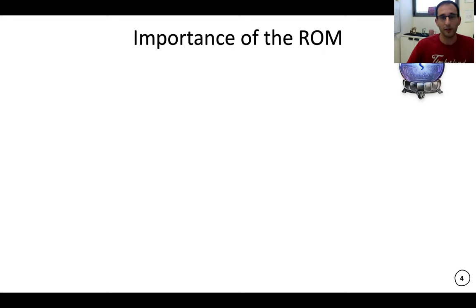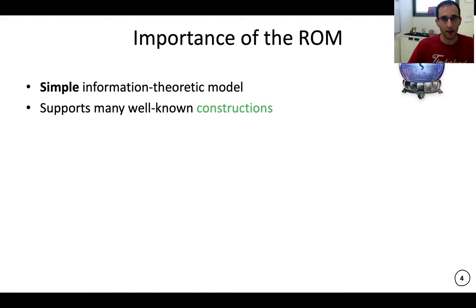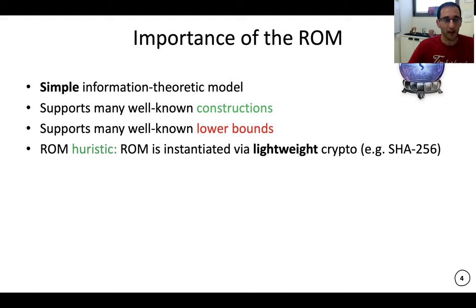Why do we study the random oracle model? It's a very simple information theoretic model. It talks about probabilities of the random oracle. There's no computational assumptions here. There's beautiful constructions that we'll talk about. It actually supports lower bounds as this talk suggests. So we can prove unconditional lower bounds about constructions. And finally, you can take the Fiat-Shamir heuristic where you replace the random oracle with some specific lightweight cryptographic hash function, for example SHA-256.